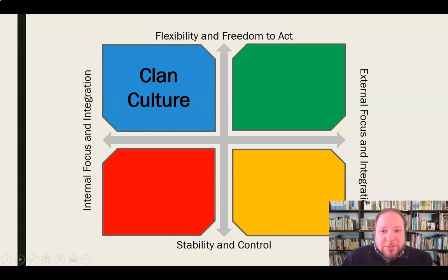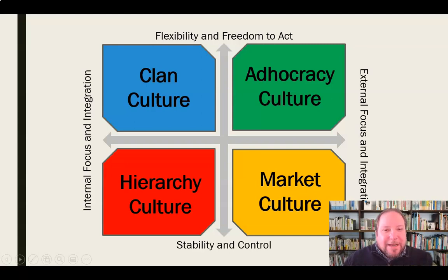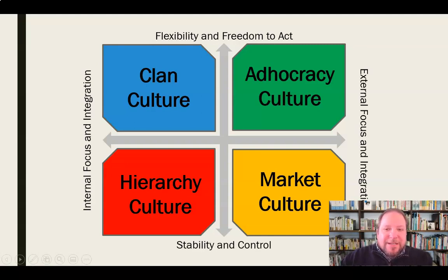We have clan culture, which is high in internal focus and flexibility, as well as adhocracy. You can also see how market culture and hierarchy culture line up. These are the four types of cultures identified as part of the Competing Values Framework. Quinn and Rohrbaugh did this research and came up with these two dimensions and four culture types. Let's take a look at each one and examine how they're different.